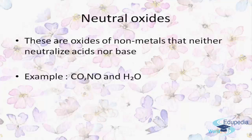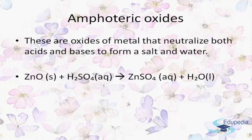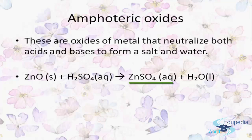Neutral oxides are most common in non-metals and can neither neutralize an acid nor a base — they are simply neutral. Examples include carbon monoxide, nitrogen oxide, and water. Amphoteric oxides are basically found in transition metals; these are oxides of metals that neutralize both acid and base to form salt and water. For example, zinc oxide reacts with sulfuric acid to form a salt and water.